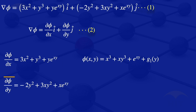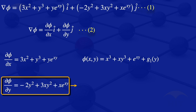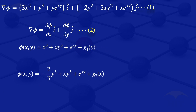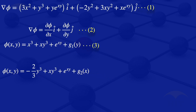Looking at the second partial derivative equation: since we need the function from its derivative, we integrate with respect to y. This gives φ(x, y) equals −(2/3)y³ + xy³ + e^(xy) plus g₂(x). The constant of integration g₂ is a function of x only, because we had a partial derivative with respect to y. Label these as equations 3 and 4.